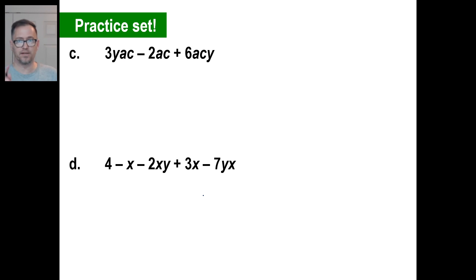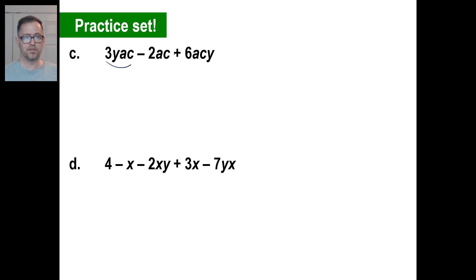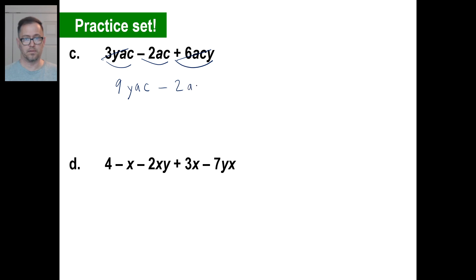Go ahead and pause to try C and D. For C: there's a yac and another yac. I've got 3 of that and 6 of that — that gives me 9yac. And this other term is just hanging off — we're done. Don't try to subtract it — they're not like terms. You cannot add them together.